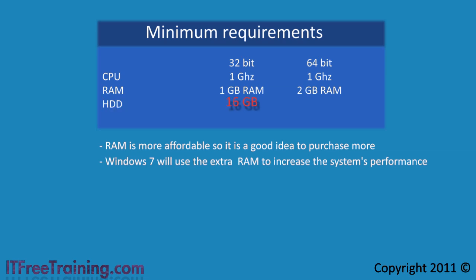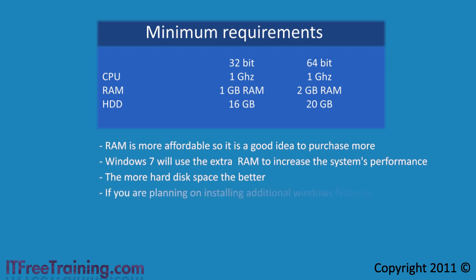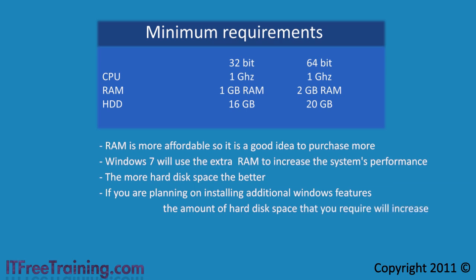You will need 16 gigabytes of free space to install the 32 bit version and 20 gigabytes of free space for the 64 bit version. As with the RAM, the more hard disk space the better. These figures are only for the base install. If you are planning on installing additional Windows features, the amount of hard disk space required will increase.